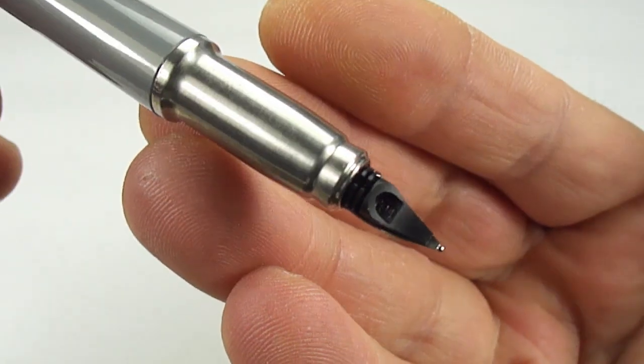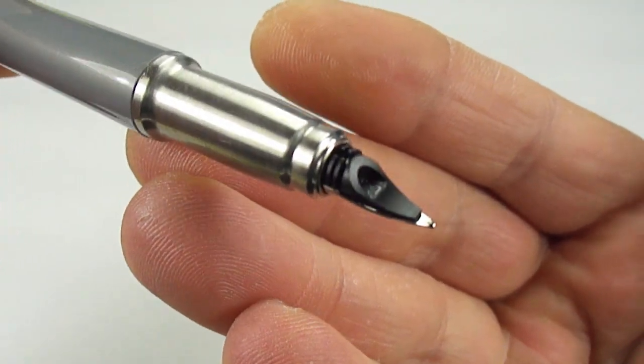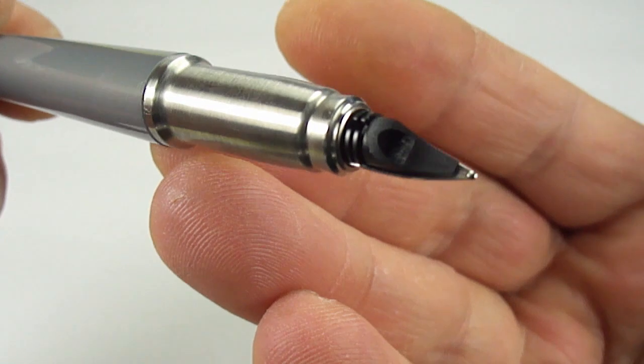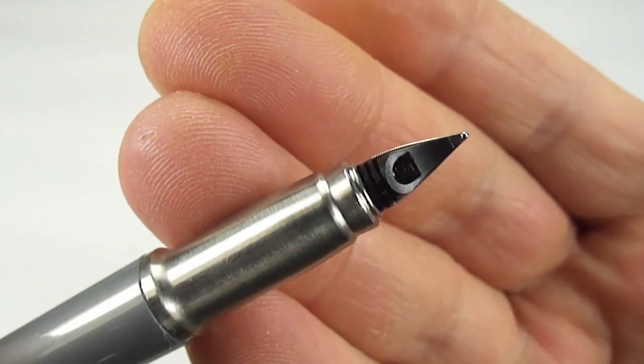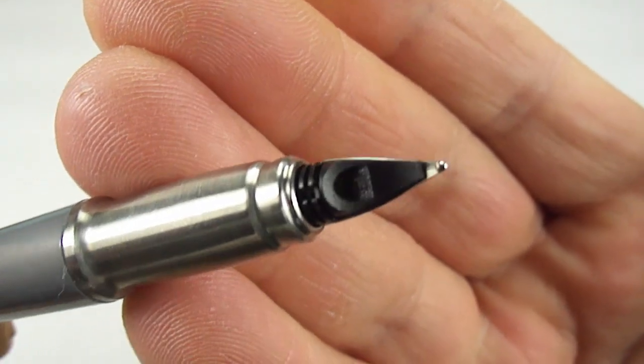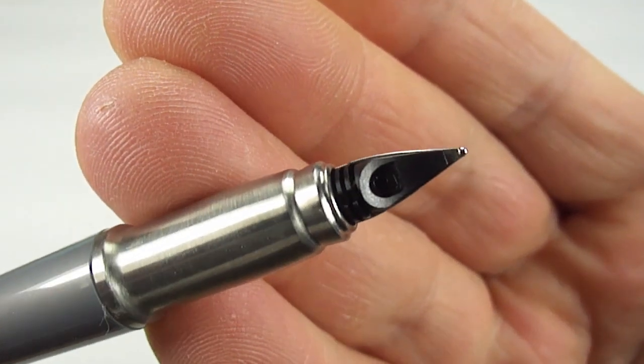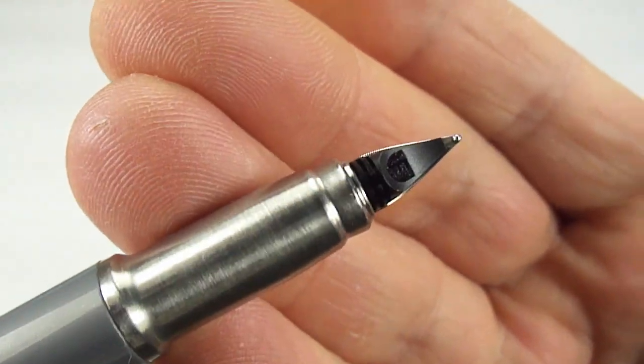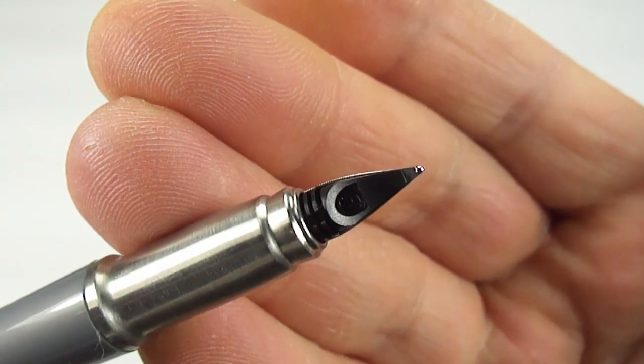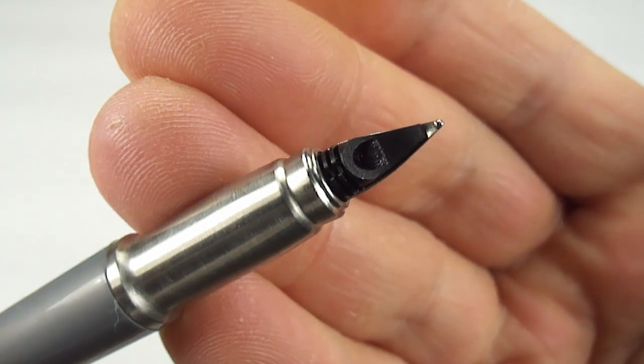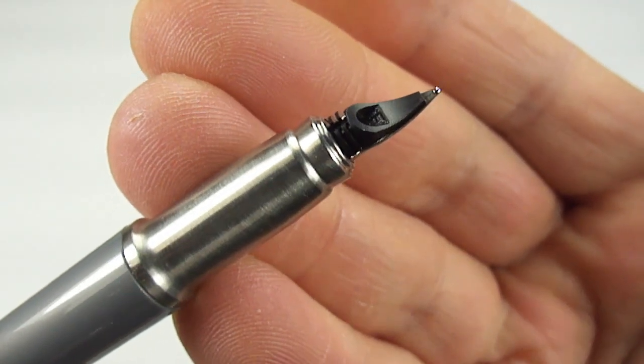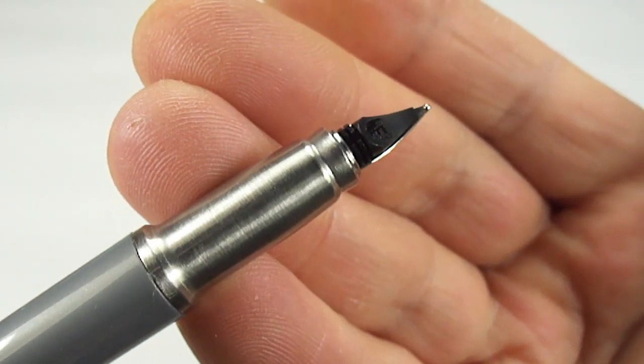And then if we show you the feed underneath there, you can see quite a modern Parker feed. And if we hold it up to the correct angle, I don't know if you can actually see it, but within the feed it actually has the letter F, and that stands for fine. So it's got a lovely fine nib.